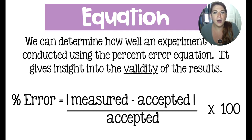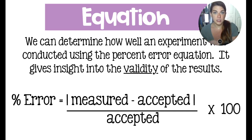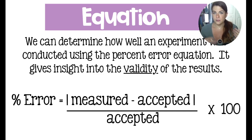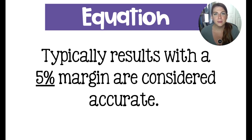We can take a mathematical measurement of how close your data is to the correct scientific accepted value using what's called the percent error equation. Percent error equals the absolute value of (measured value minus accepted value), divided by the accepted value, multiplied by 100. Typically, we like our results to be within 5% to consider an experiment's results accurate.